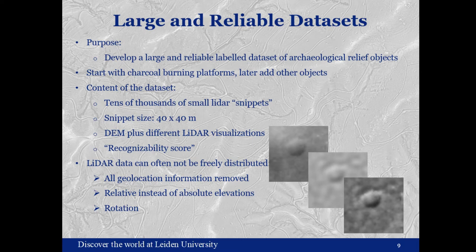One of the issues when creating a dataset like this is that LiDAR data can often not be freely distributed. The way around this in our case is that all geolocation information is removed from the data, we are not giving out absolute elevations but relative elevations within the snippet, and all snippets may be affected by arbitrary rotation. This makes the dataset essentially unusable for any purpose other than as a training or learning dataset, while at the same time retaining all the information we need for just this purpose.